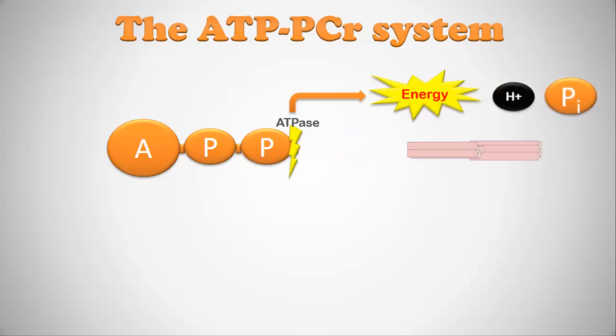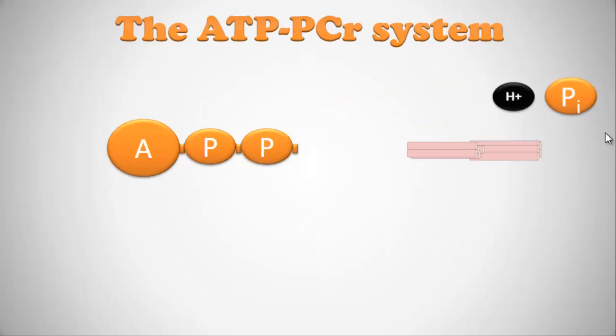This is very important: when ATP is broken down inside our muscles, the inorganic phosphate and hydrogen ion don't just disappear. They're released from ATP and start to build up inside the muscle. That buildup of hydrogen ions and inorganic phosphate — collectively called metabolites — is a probable cause of fatigue.